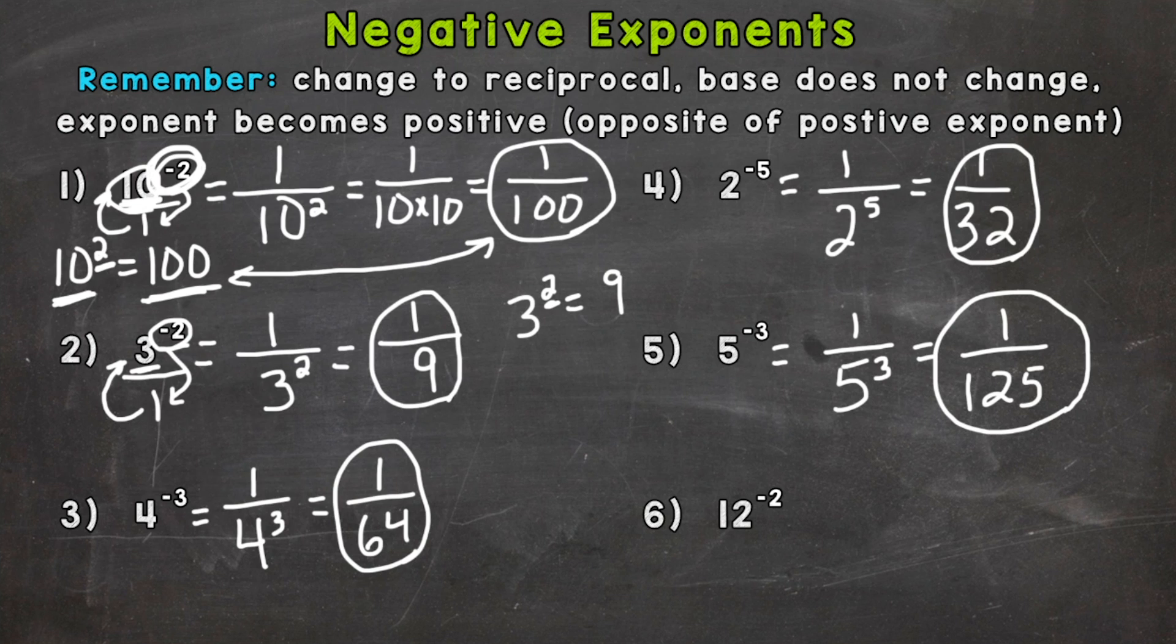Lastly, 12 to the power of negative 2. Again the steps: reciprocal, same base of 12, positive exponent. 12 to the second power, or 12 squared, means 12 times 12, which is 144. So we get 1/144.